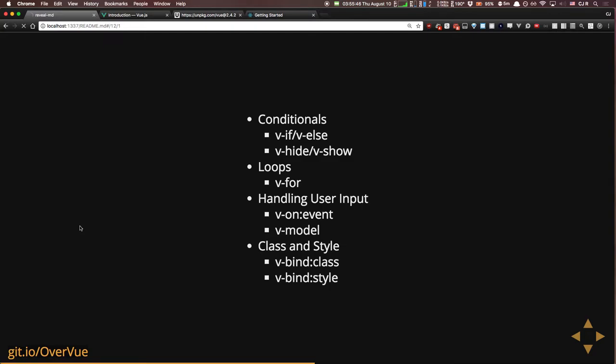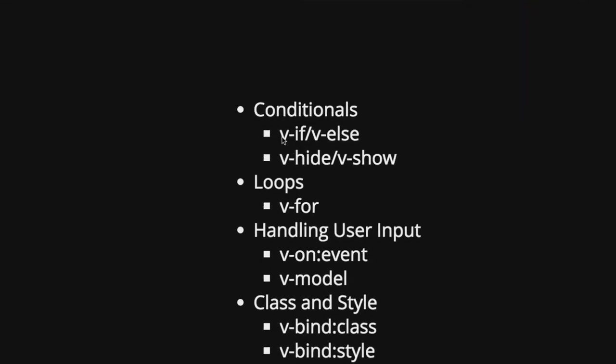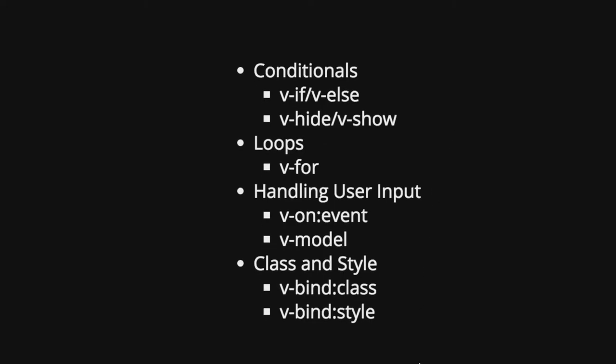In modern front-end apps you want to do things like conditional rendering — if something is true, show this element; if not, hide it. You want to do loops: iterate over an array of data and show all items as list items. You want to handle user input — Vue offers v-on events: v-on:click, v-on:hover, v-on:mouseover — all available to you, with functions that will be called. You can bind inputs to v-model, which binds your input to the data.